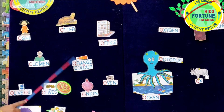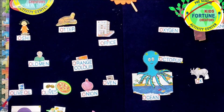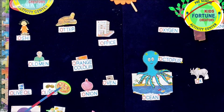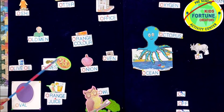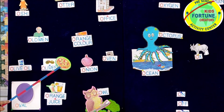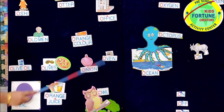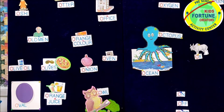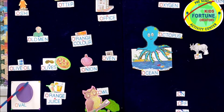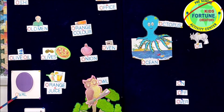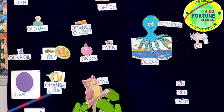He wore an orange colored dress. Her mama made delicious pizza for her in olive oil. She sprinkled some olives and onion on the pizza and put it in the oven. After preparing the pizza, she packed it in a box. The shape of the box is oval. Along with pizza, she packed orange juice also.